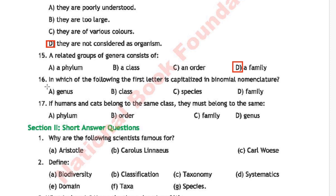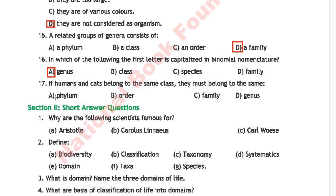Question 14: If a human and a cat belong to the same class, they must also belong to the same — option A is phylum, option B is order, option C is family, and option D is genus. The correct answer is option A, phylum.